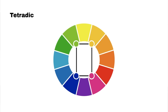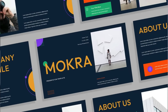Tetradic colors are two sets of complementary colors that work together as a whole palette. These colors work best when one color is dominant and the last three are used as accents. In this case, we have a yellowish green, a yellowish orange, a purpley blue, and a magenta together. Because these are such vibrant colors, one of them would have to be used as a contrasting dominant color.